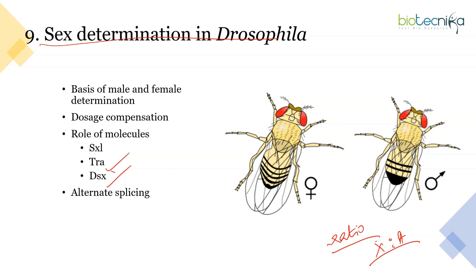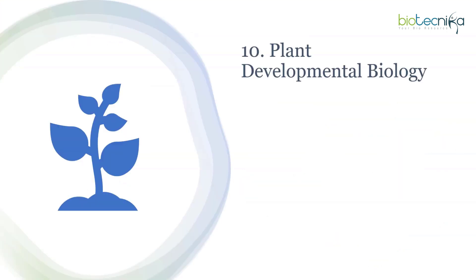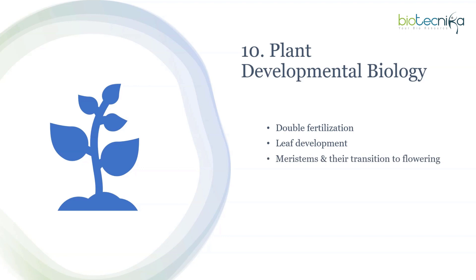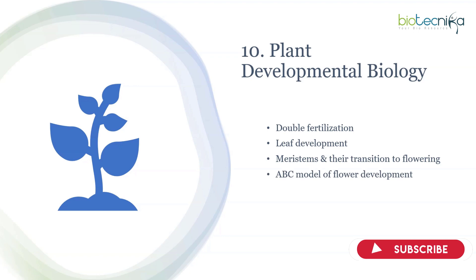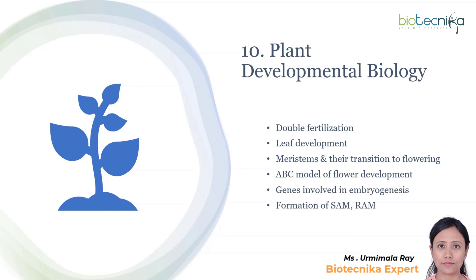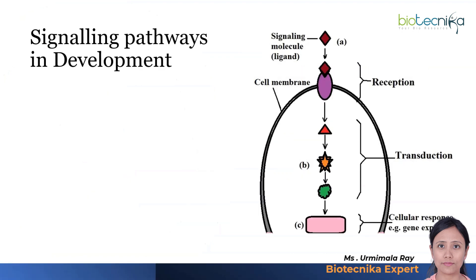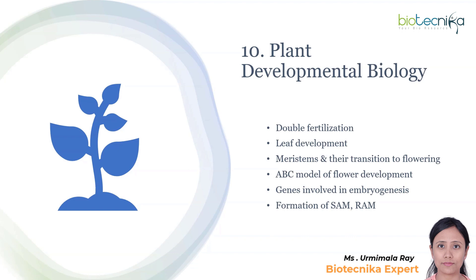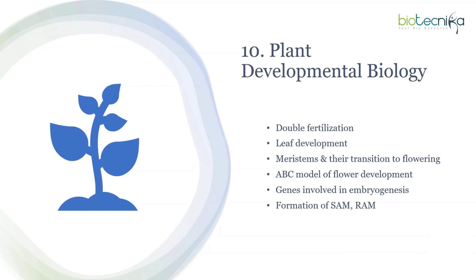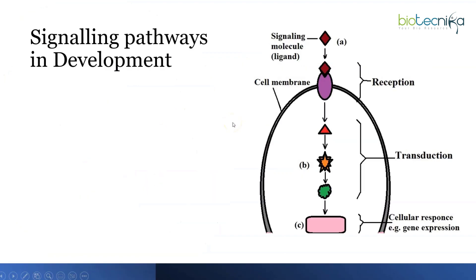The last animal topic is plant developmental biology. Focus on double fertilization, leaf development, meristems and their transition to flowering, complete floral development including the ABC model, genes involved in embryogenesis in Arabidopsis, formation of root apical meristem and shoot apical meristem, and the flowering process including vernalization and floral organ identity genes. These are commonly asked topics that rotate through exam papers.